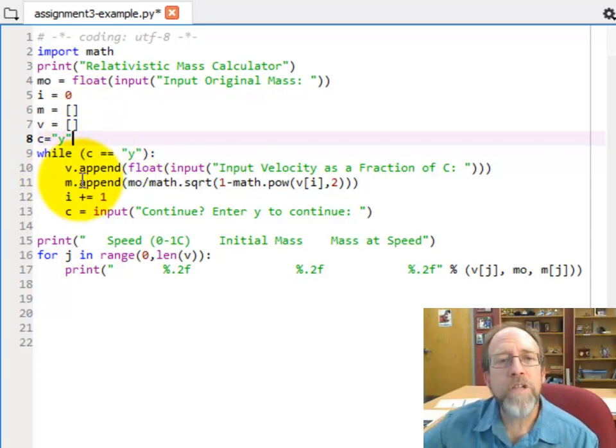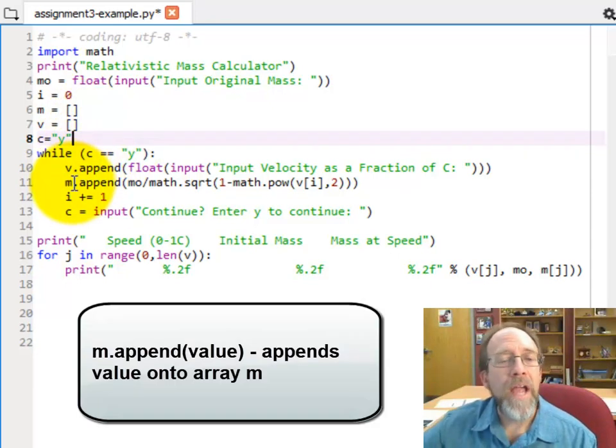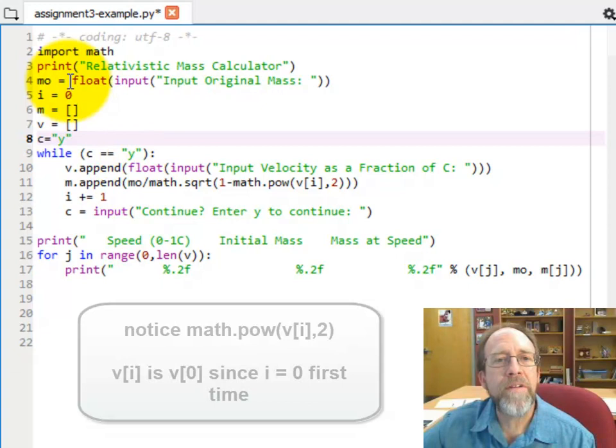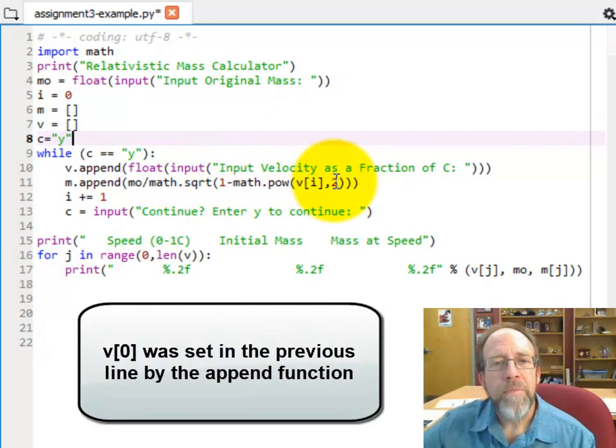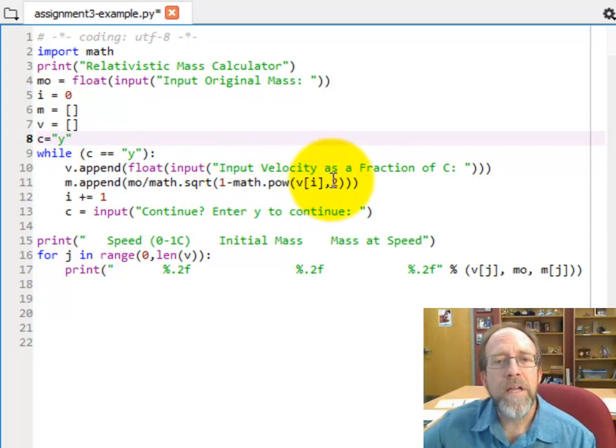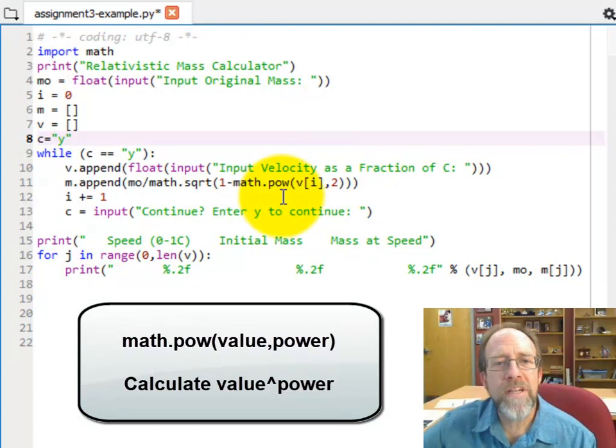Then down here, I'm going to take the array m, and I'm going to append a value. And that value is going to be m0, or m0, which by the way I did up here at the beginning, at the very beginning of here, I actually got that from the user. And I'm going to divide it by the square root of 1 minus v squared. And the way you square something is take math.pow, the value that you're doing, and to the power.